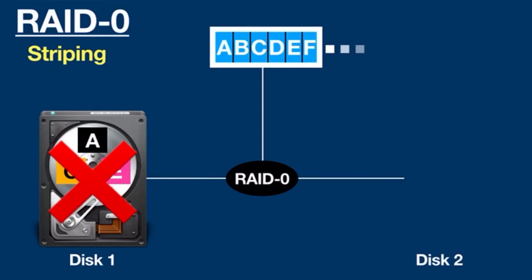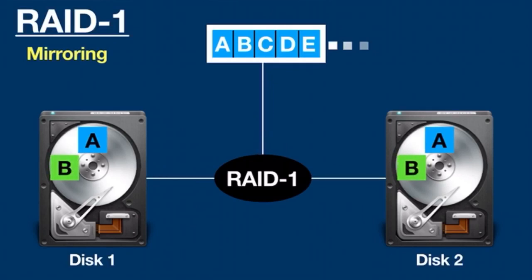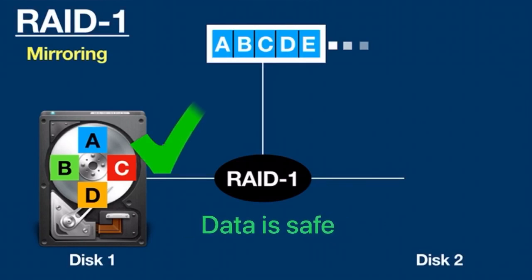RAID 0 is used particularly for live streaming where people need high speed but low reliability, and all the storage capacity is used. RAID 1, also known as disk mirroring, is fault tolerant and requires at least two drives. Data is duplicated on the second drive, so in the case of a single drive failure, data loss would not occur. Read performance is improved because either disk can be read at the same time, but write performance is the same as a single disk. The main drawback is storage capacity is only half of the total capacity.